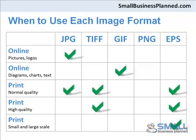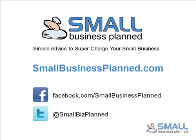Here's a nice summary of when to use each image format. For online images, pictures and logos, I recommend the JPEG format. For online diagrams, charts or text, use the GIF format. For run-of-the-mill print jobs, your best bet is JPEG, TIFF or EPS. For more high-quality print copies, use a TIFF or EPS. For larger print versions such as large posters or big signs, use an EPS. And that's the difference between your image formats. For more tips, check me out on smallbusinessplanned.com.